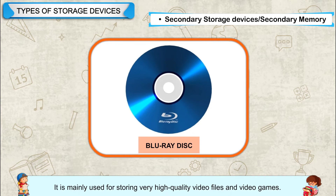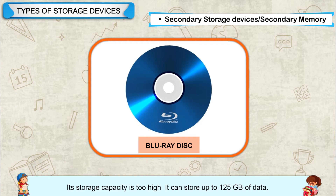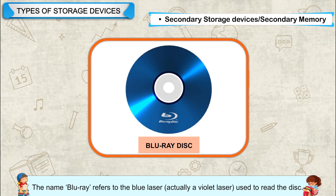Blu-ray Disk is mainly used for storing very high quality video files and video games. Its storage capacity is very high — it can store up to 125GB of data. The name Blu-ray refers to the blue laser, actually a violet laser, used to read the disk.